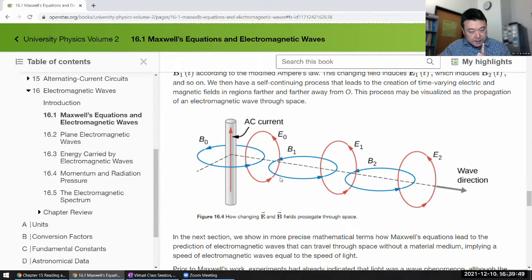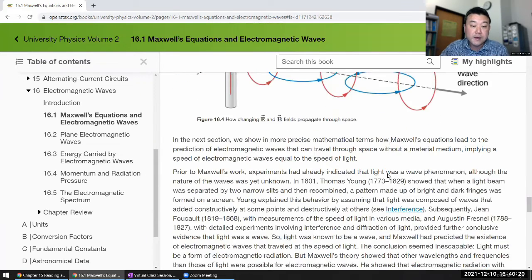Because without the Maxwell term, changing electric fields didn't do anything before the Maxwell term. Now, with the Maxwell term, this changing electric field can itself generate changing magnetic field, which again produces changing electric field, which again produces changing magnetic field. So, there's a whole chain of events that can now happen. And this is the conceptual description of electromagnetic wave.